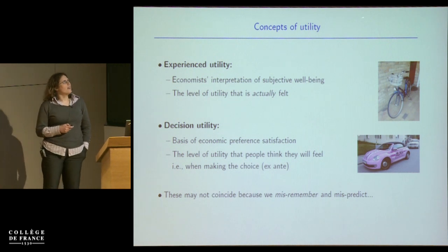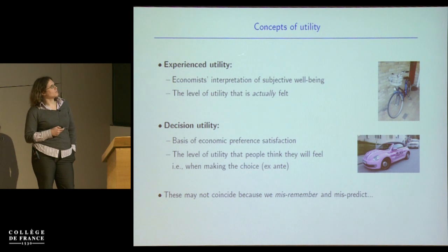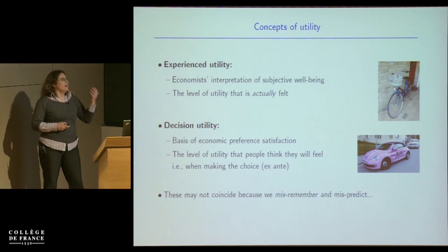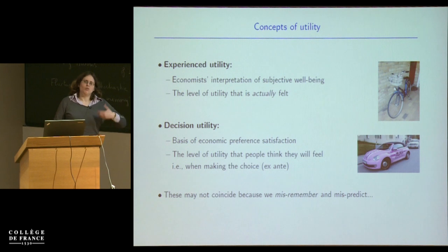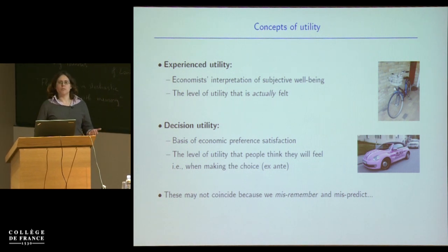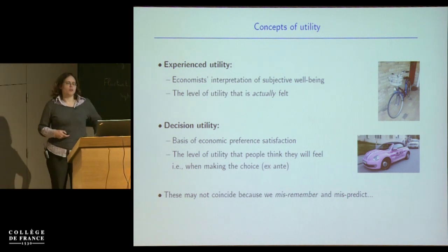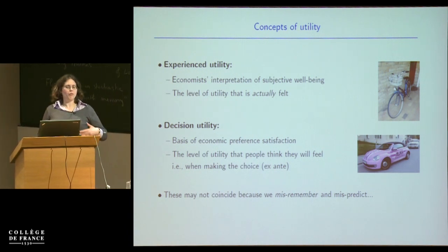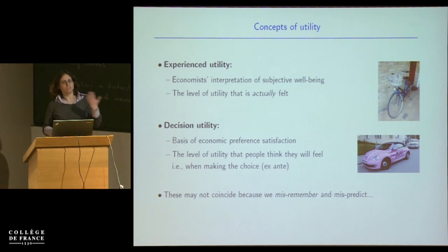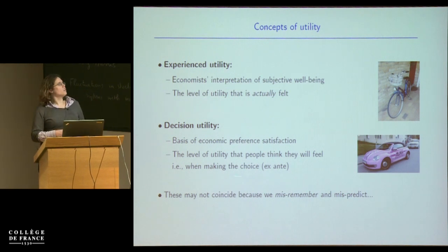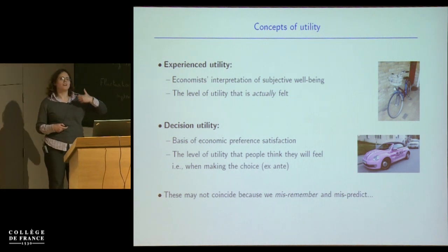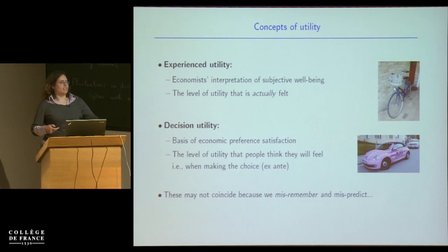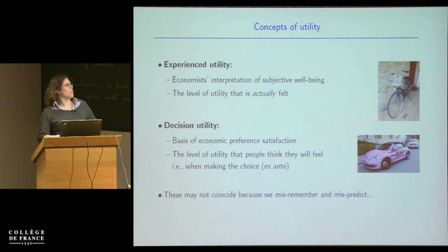There are several different flavours of utility. There's experience utility — what economists interpret as the well-being or happiness you get when you're actually doing something, when you actually make a decision, the benefit you get from it. On the other hand, there's decision utility — the basis of the theory that we're rational agents: we look at the utility for different options and choose the one that will give us the most. It's the level of utility people think they're going to get before they make a choice. If I'm deciding whether to take the bike or the car home, I pick the one with the biggest utility.